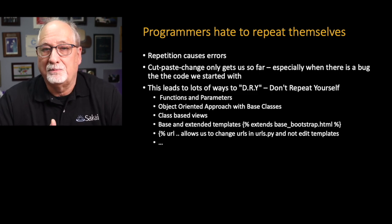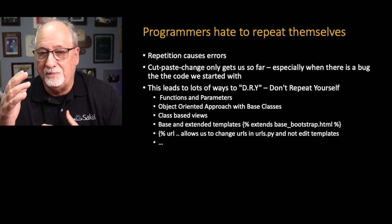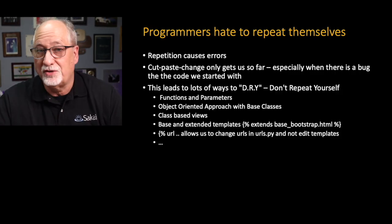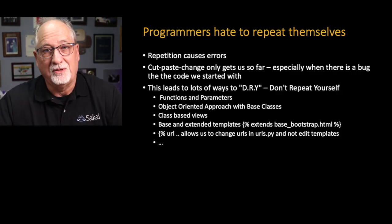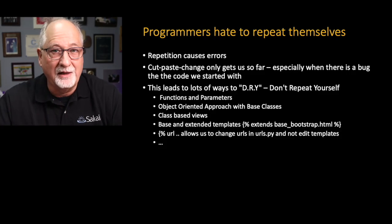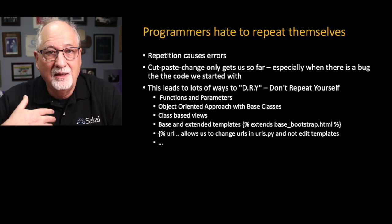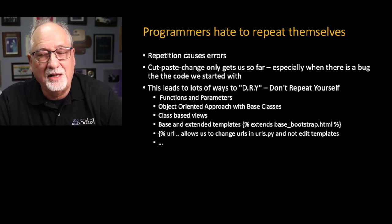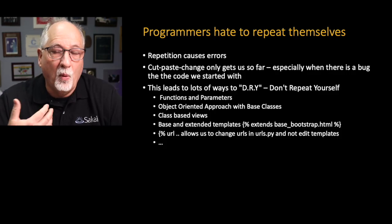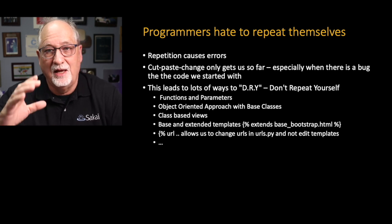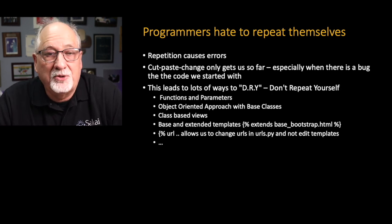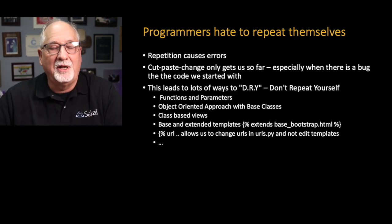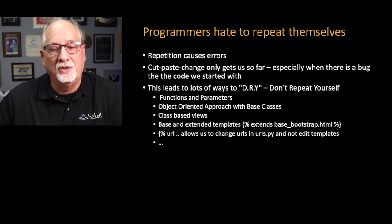Things like functions with parameters, object-oriented approaches with base classes we're extending, class-based views in Django versus function views — function views are simpler and easier to understand, class-based views are beautiful and elegant but hard to understand. Like templates, like the navigation you've been building where we say 'extends base-bootstrap.html' — that's a way to not put the same navigation HTML in every page. And like the percent URL, you can remap URLs in urls.py and not have to make changes in your templates. We don't like to repeat ourselves.